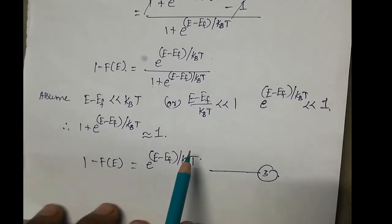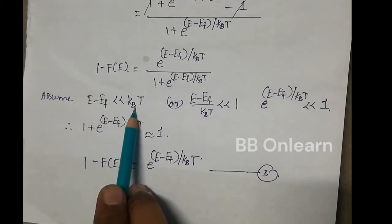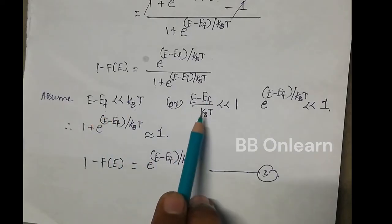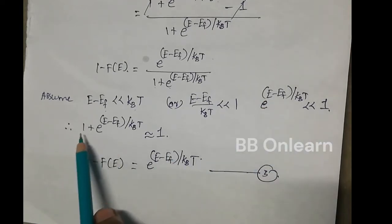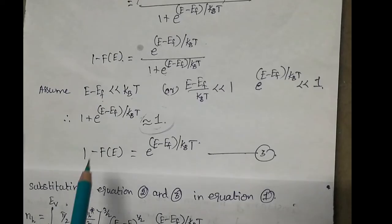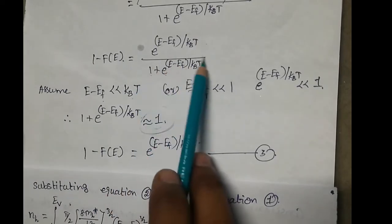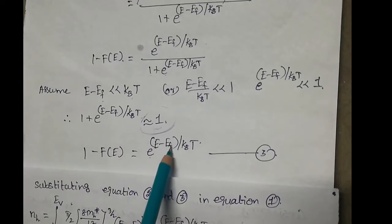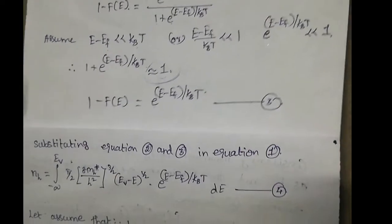Here we also assume that (e − ef) is much less than kBT, so e^((e−ef)/kBT) is also less than 1. Therefore in the denominator, 1 + e^((e−ef)/kBT) ≈ 1, and so 1 − F(e) ≈ e^((e−ef)/kBT).